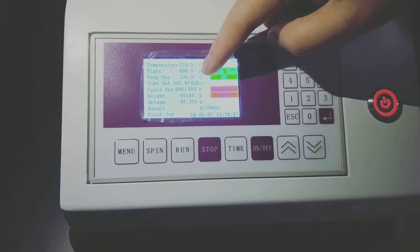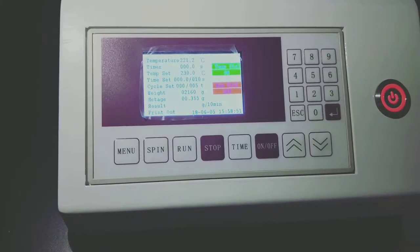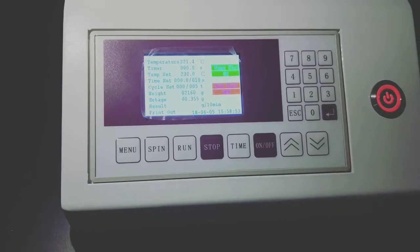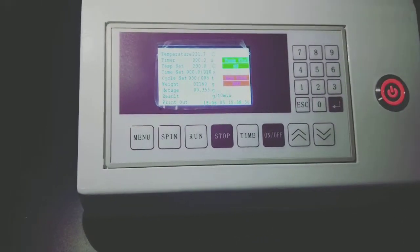And this time set is used for automatically cutting every 10 seconds. If the Melt Flow Index value is small, we can set this time a little bigger, like 20 seconds or others.